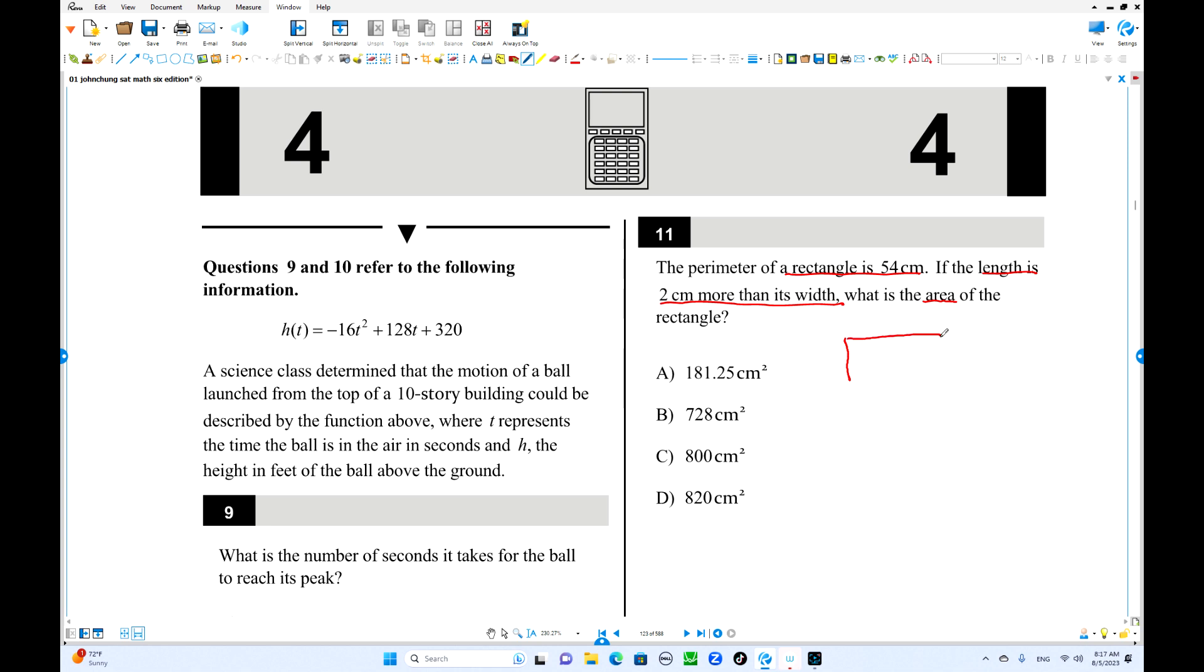The perimeter is 54. If this is width, this is length. Length is about x plus 2, so half of this perimeter is 27. When you take out 2, that is 25, you can divide by 2, so 12.5. This is 12.5, this is 14.5. So the area is, you can use your calculator, that equals, let's see, this one is available right, 181.25 centimeters square. I think that's the answer.